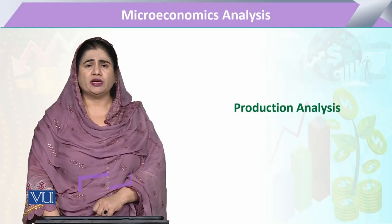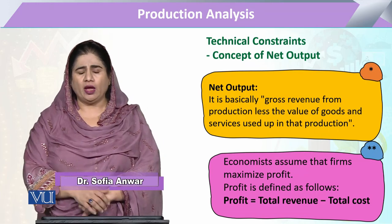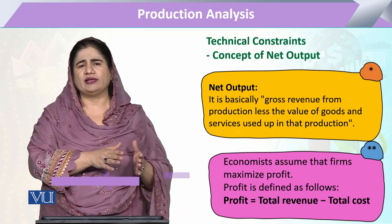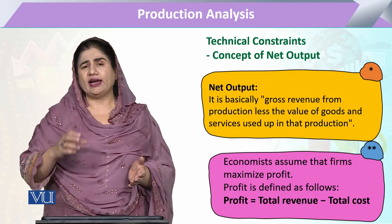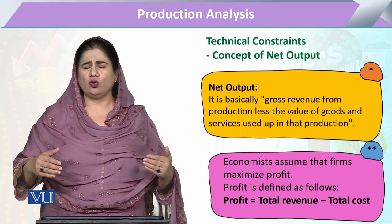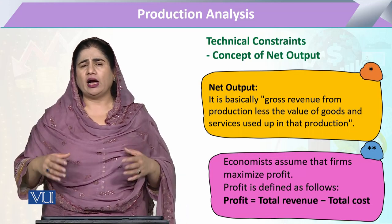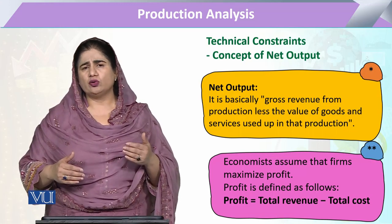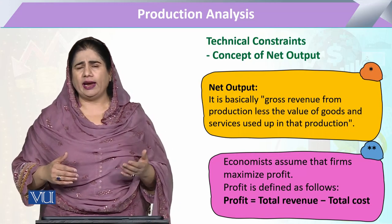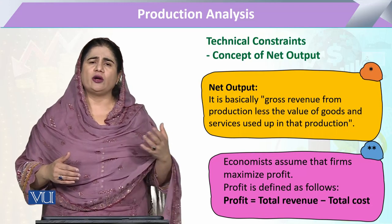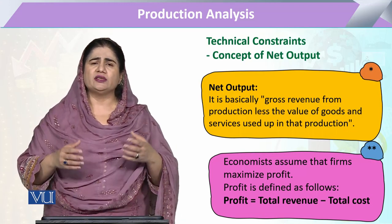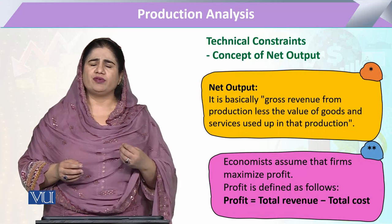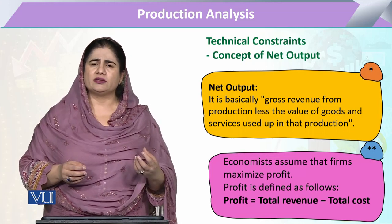Under the production analysis we are going to study the concept of net output. Net output is different from total output. All the resources utilized for production have to be valued and their value reduced from total output. So net output is nothing else but the price multiplied by total physical product — the quantity — minus the total cost.